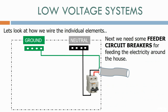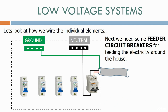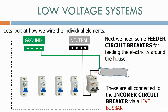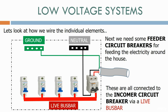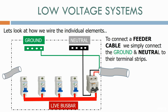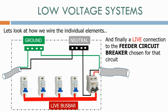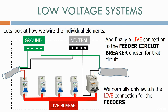Next we need some feeder circuit breakers feeding the electricity around the house. These are all connected to the incomer circuit breaker via the live bus bar. To connect a feeder cable, we simply connect the ground and neutral to their terminal strips, and finally a live connection to the feeder circuit breaker chosen for that circuit. We normally only switch the live connection for feeders.